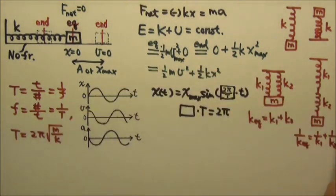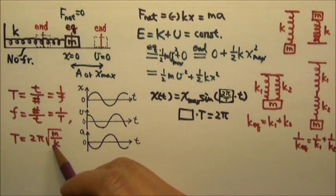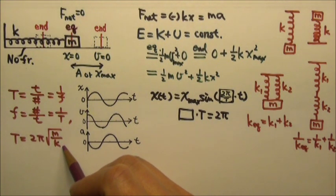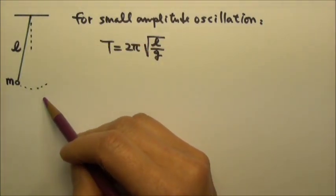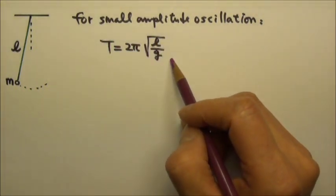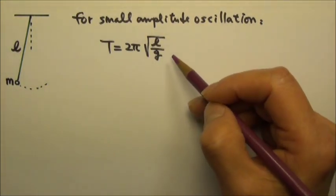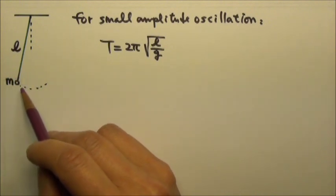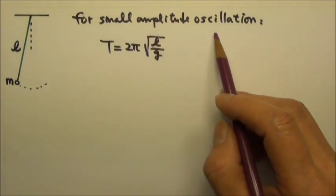All these results also work for combined-spring oscillators. From the period equation, the period of a spring-mass oscillator only depends on the mass and the spring constant — changing the amplitude will not change the period. Another simple harmonic oscillator is a simple pendulum with small-amplitude oscillation. Its period depends only on the length of the pendulum and gravitational acceleration at that location; changing the mass or the amplitude does not affect the period, as long as the amplitude is kept small.